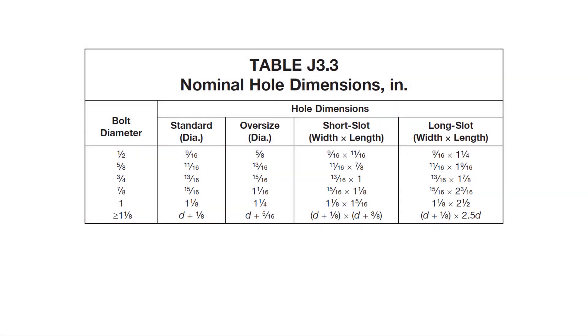Looking at Table J3.3 from the AISC specification, recall that the diameter of standard holes made for bolts larger than 7/8 inch is 1/8 of an inch larger than the diameter of the bolt.